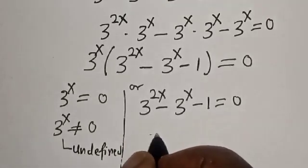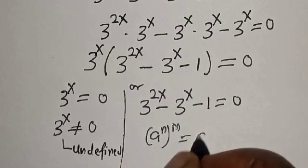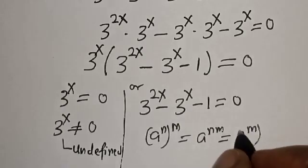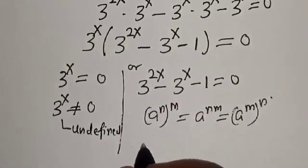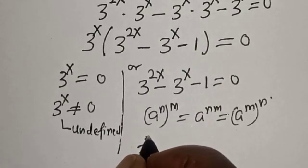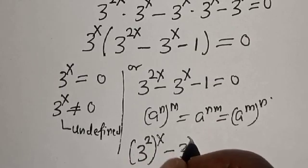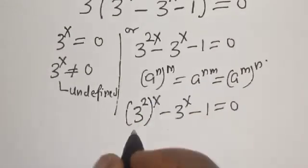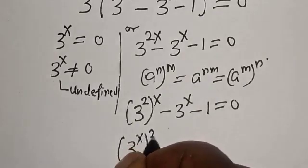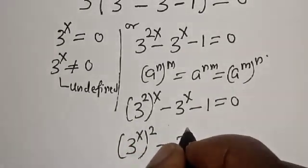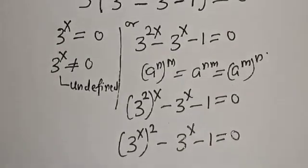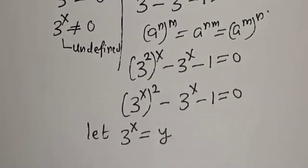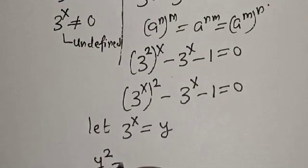Now remember this rule that a raised to power n raised to power m is equal to a raised to power nm, and this also equals a raised to power m raised to power n. So we can write 3 raised to power x, raised to power 2, minus 3 raised to power x minus 1 is equal to 0. That is 3 raised to power x, all raised to power 2, minus 3 raised to power x minus 1 is equal to 0.